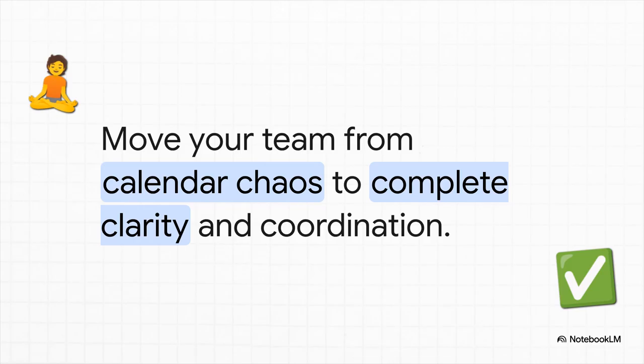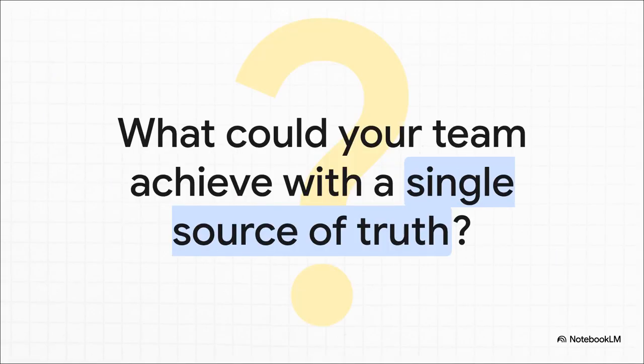It's about moving away from that constant state of confusion and calendar chaos and moving toward a system of complete clarity, where everybody on the team knows what's happening, when it's happening, and where they need to be. What could your team really achieve if all that time and energy you're losing to scheduling conflicts and calendar confusion was put back into actual productive work? Because the single source of truth for your schedules doesn't just save time — it unlocks your team's true potential.